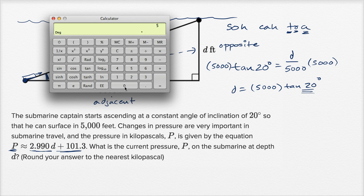So times 5, 1, 2, 3 is going to be equal to this. So that's my depth. 1,819.85 feet, it keeps going. And now I can substitute into this formula.